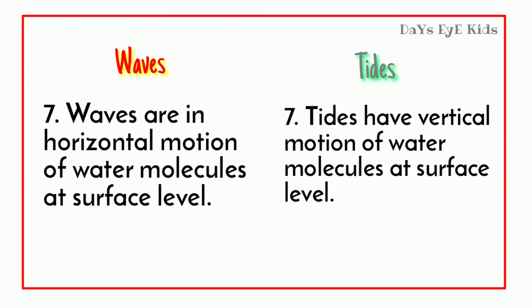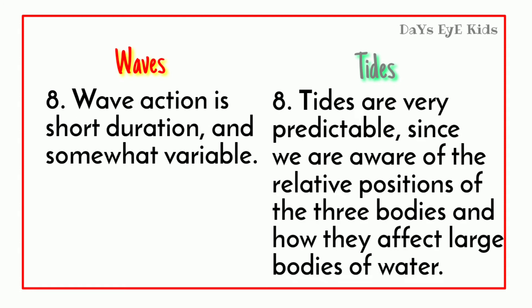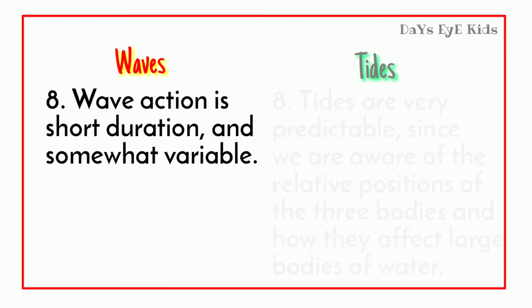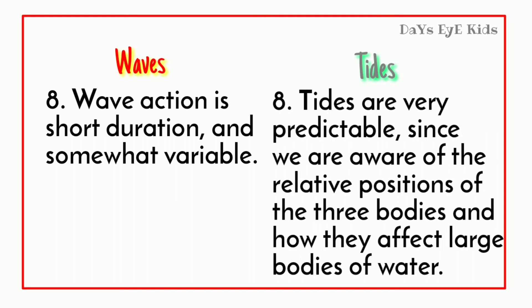Waves occur many times a day, while tides occur two times a day. Waves are the horizontal motion of water molecules at surface level, whereas tides have vertical motion of water molecules at surface level.